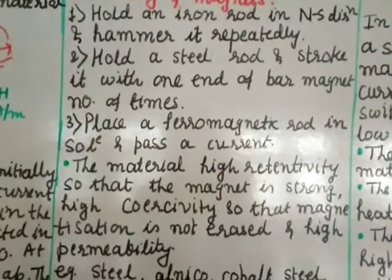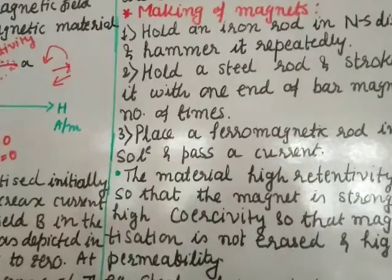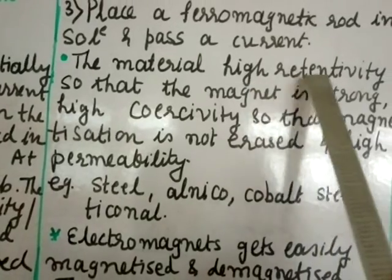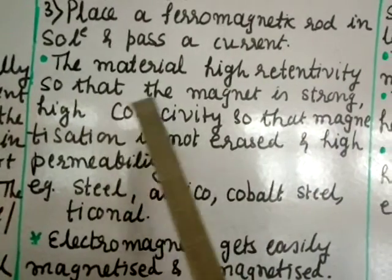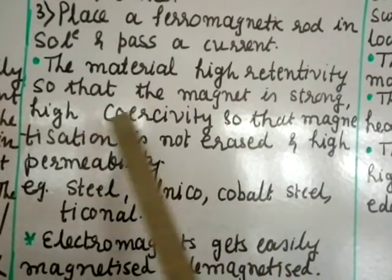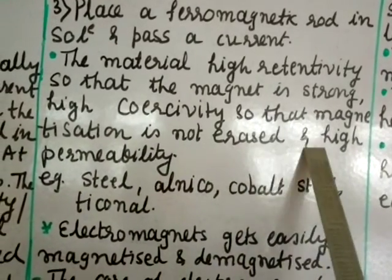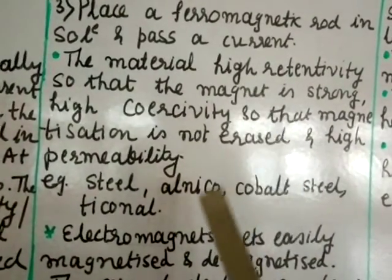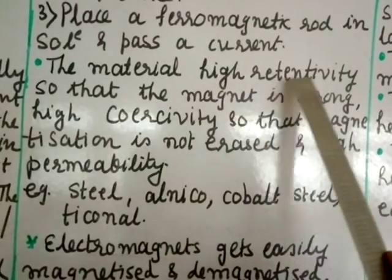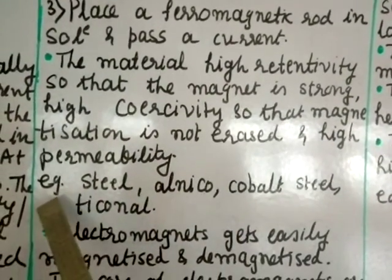If we are going to select the material for permanent magnet it should have some properties. The material with high retentivity so that the magnet is strong. Then high coercivity so that magnetization is not erased, and high permeability. So if you are selecting a material for permanent magnet, the material should have high retentivity, high coercivity, and high permeability.